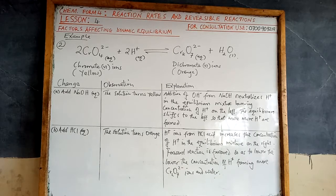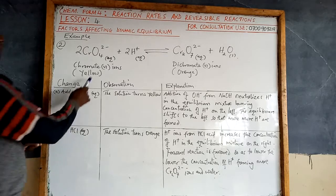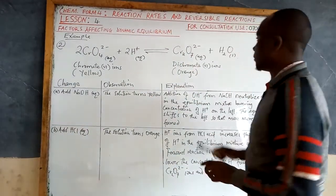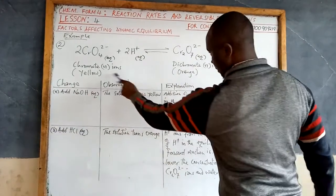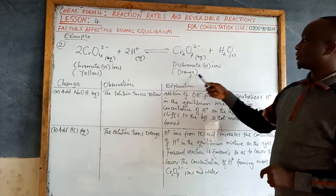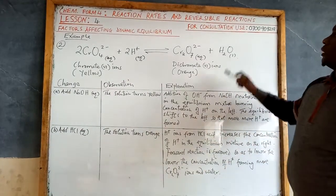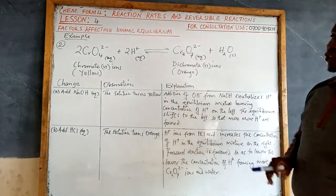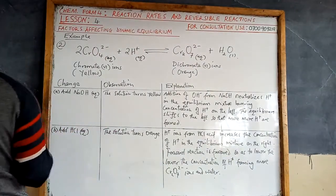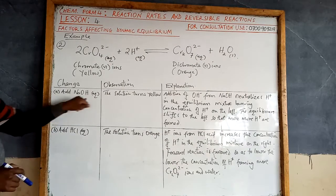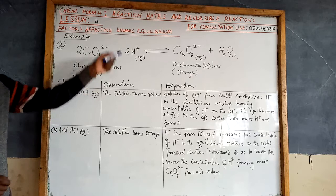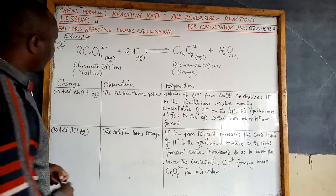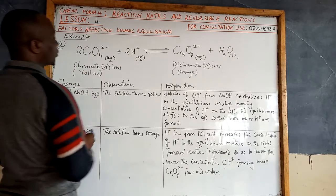The second example involves chromate(VI) ions and dichromate(VI) ions. When you add hydrogen ions or acid, chromate(VI) ions — which are yellow — are converted to dichromate(VI) ions, which are orange. Consider a system at equilibrium. If you add sodium hydroxide to this mixture, the solution turns yellow.